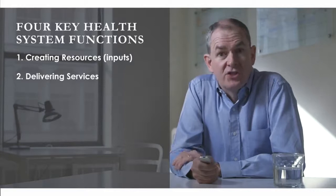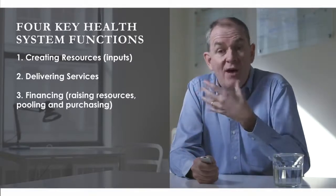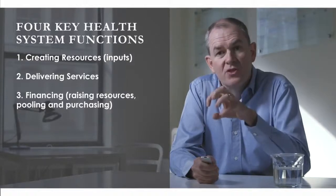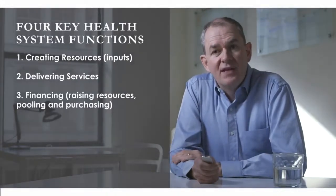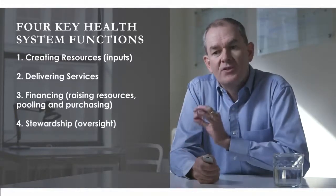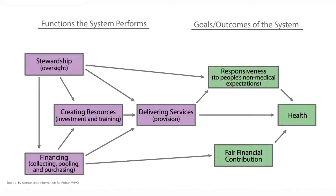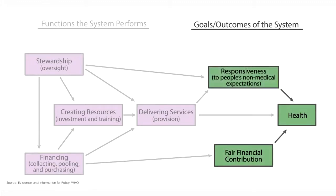The third major function concerns the financing of the health system. We'll discuss this in another lecture, but here one should consider how one raises finances, how one pools resources, and the very important issue of purchasing services efficiently. The final major function concerns stewardship — the overall management and oversight of the health system — where there is an extremely important role for the state. When these functions combine effectively and work well in an efficient and equitable way, this is how one improves the health system and delivers outcomes of improved health indicators, fair financial contributions, and a system responsive to people's needs.